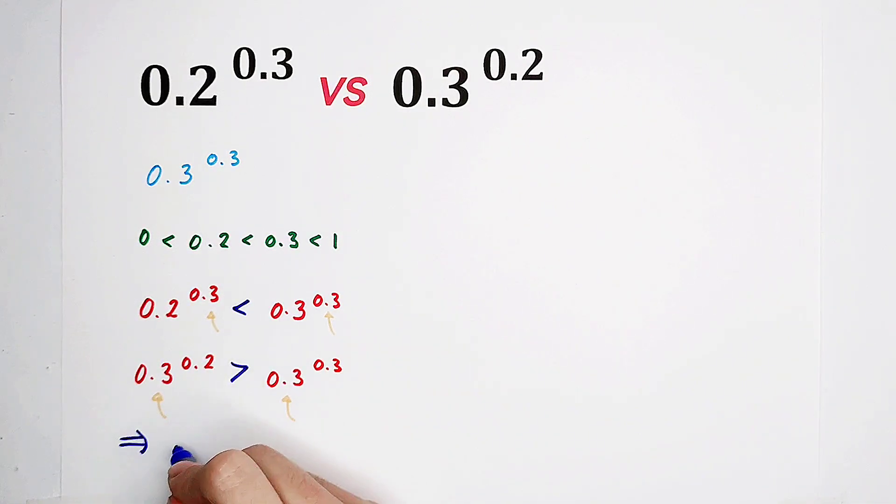Hmm. 0.2 to the power of 0.3 is smaller than 0.3 to the power of 0.3. It is smaller than 0.3 to the power of 0.2. The left-hand side is smaller than the right-hand side. So, which is greater? Of course, the right-hand side.